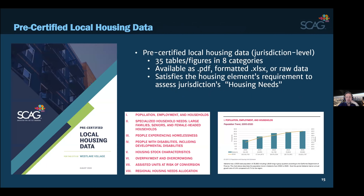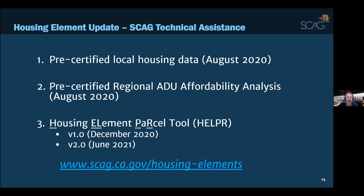The first tool is really jurisdiction-level data profiles — pre-certified local housing data. The housing element itself has a section titled Housing Needs where you basically have to assess a couple dozen data points in your jurisdiction. The majority of this is ACS data, but there are several other sources. We put this together for all 197 jurisdictions — a series of 35 tables and figures in eight categories. All of this is available at scag.ca.gov/housing-elements.